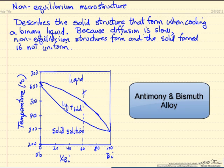What we're going to look at in this example is a binary phase diagram where we take a liquid and cool it down to form a solid, and we're going to look at an alloy of antimony and bismuth.